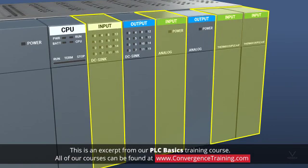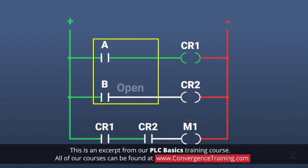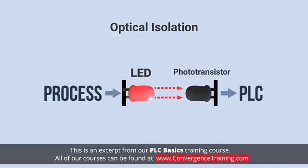PLC input modules accept electrical inputs from process components in the field and convert that information into a computer-compatible data file. Historically, PLCs have dealt with logical binary information such as whether something is running or not running, whether a switch or relay is open or closed. Digital input cards usually apply a technique such as optical isolation to prevent any line level voltages coming into the module from damaging low voltage circuitry in the module.